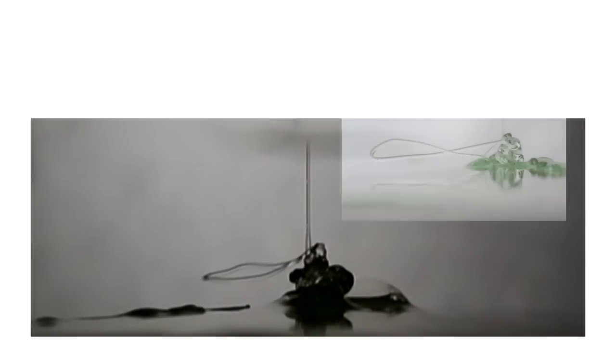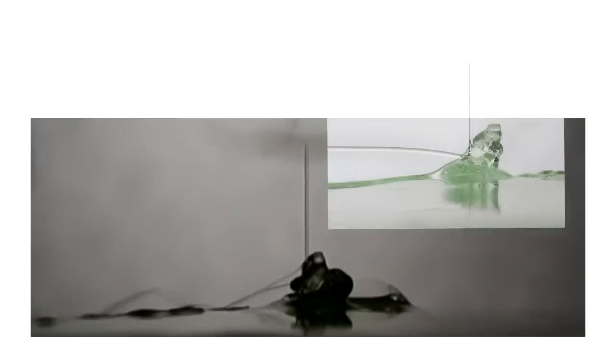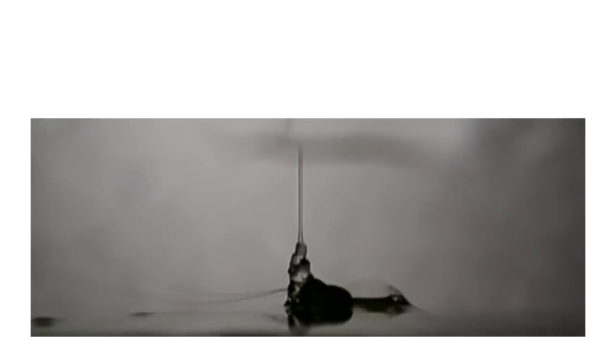This is high-speed footage of one complete cycle of the Kaye effect from initiation to termination. Let's take a closer look. The effect starts with the ejection of a loop. This loop develops into a streamer which rises until it hits the incoming stream and the effect ends.